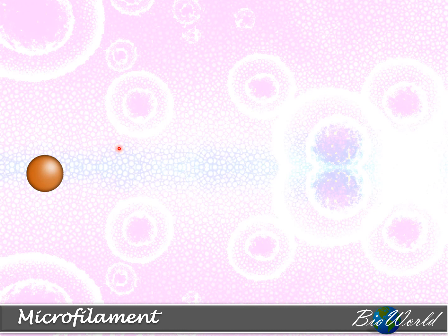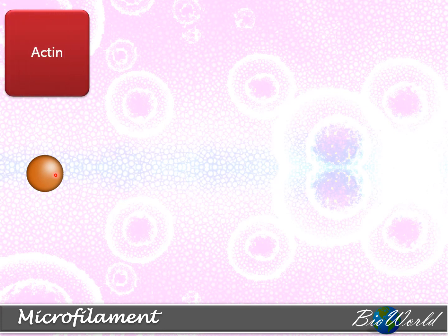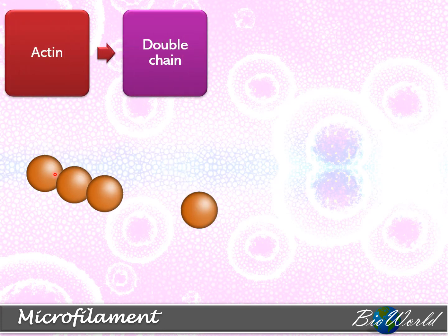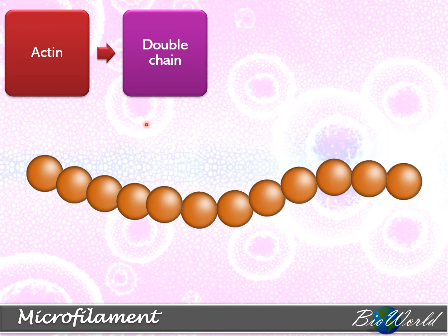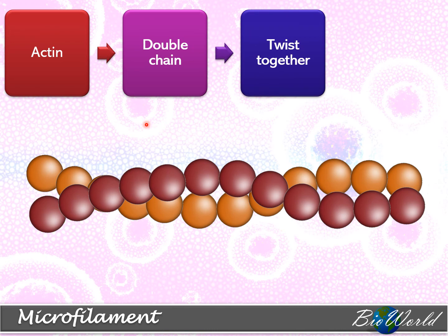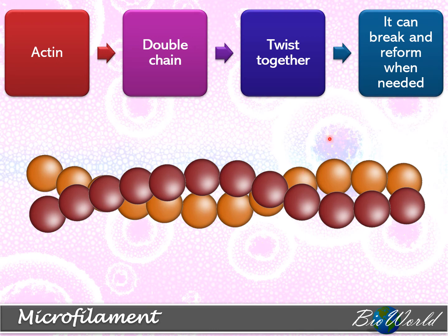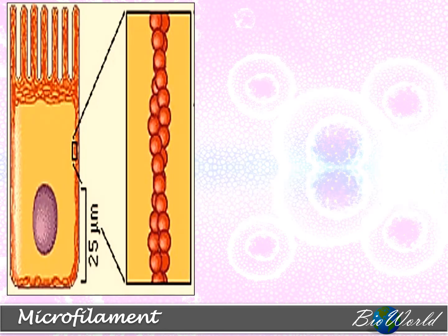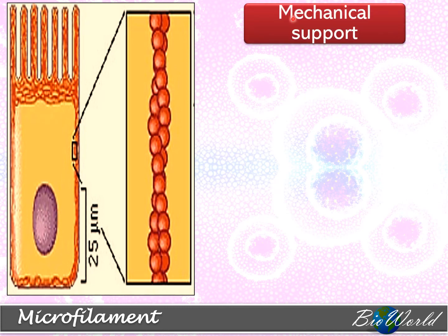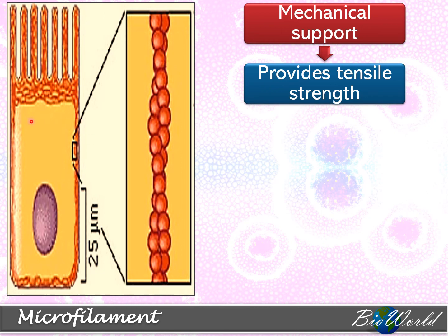Finally, let's discuss microfilaments. The actin proteins in a microfilament form a double chain, and this double chain twists together to form a helical structure. Like microtubules, microfilaments can break and reform when needed. The microfilament is located below the plasma membrane, and its position enables it to give both mechanical support and tensile strength to the cell, similar to how intermediate filaments function.